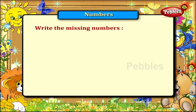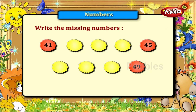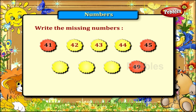Write the missing numbers between 41 and 45. The missing numbers are 42, 43 and 44. Now what are the missing numbers between 45 and 49? They are 46, 47 and 48.